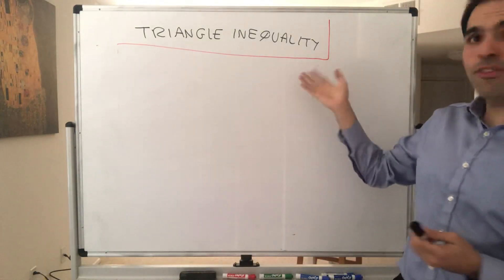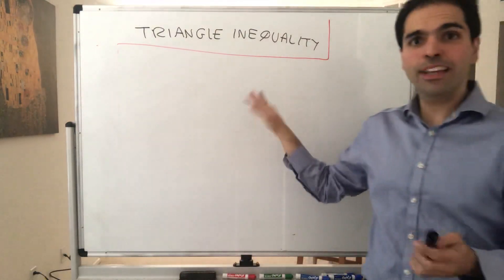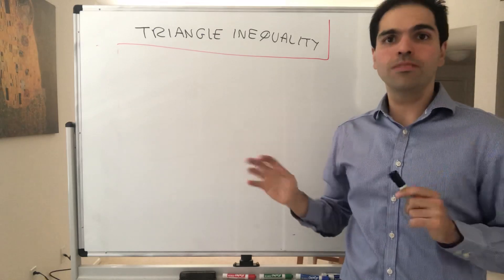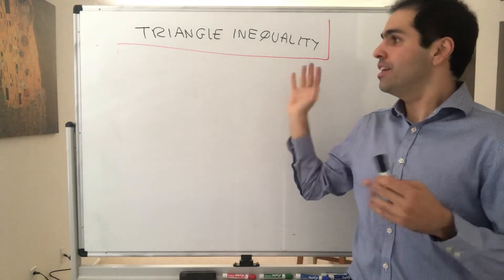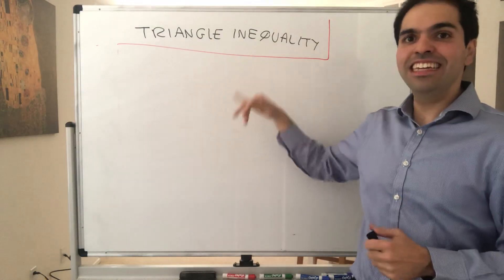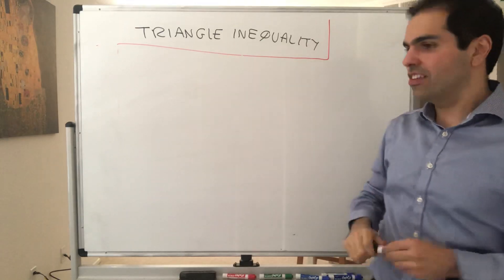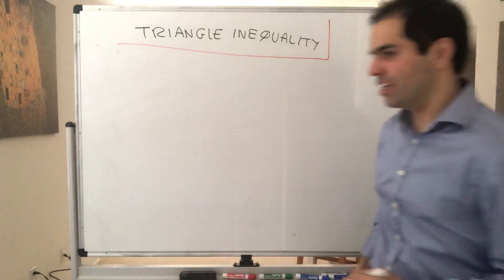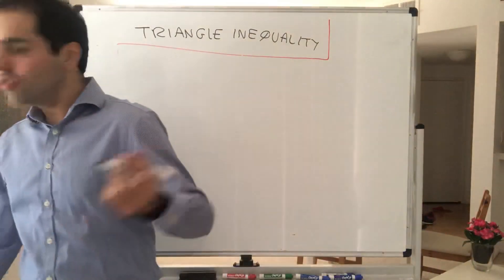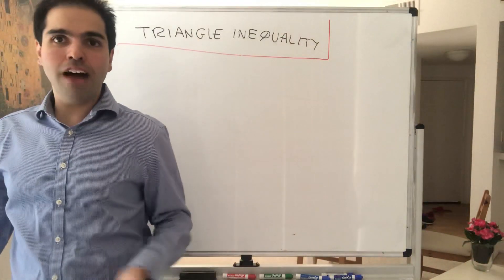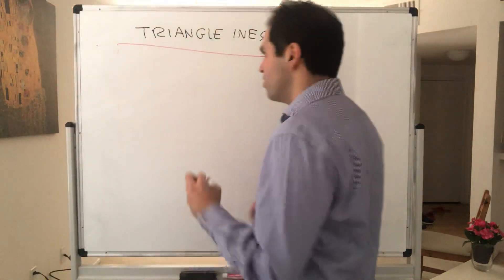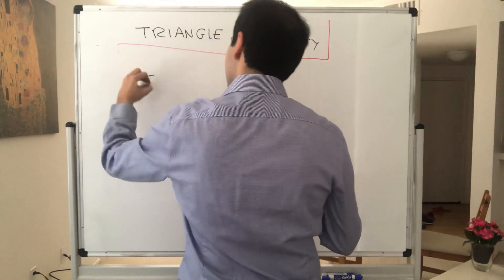Thanks for watching. Today I would like to state and prove the single most important identity in analysis, in my opinion, which is called the triangle inequality. And this has to do with absolute value, so let me quickly remind you what an absolute value is.